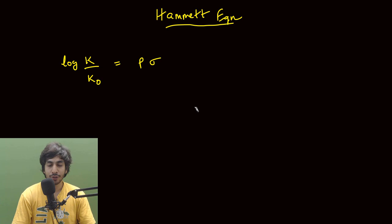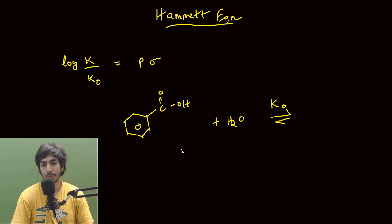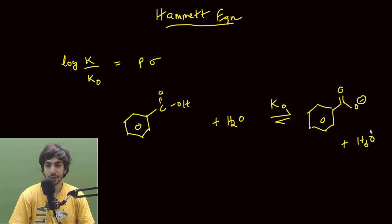If I talk about a very simple reaction — let's talk about the dissociation of benzoic acid — if you want to calculate the pKa of benzoic acid, let's say this value is your k₀, where we don't have any substitution on the aromatic ring. This forms the carboxylate anion along with H₃O⁺. So this is the basic equation of the dissociation of benzoic acid.